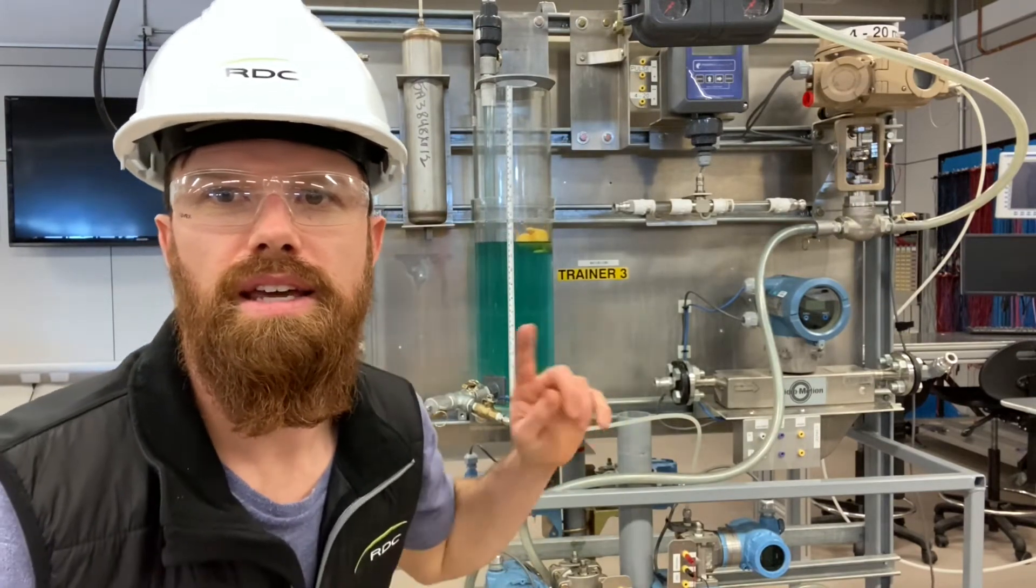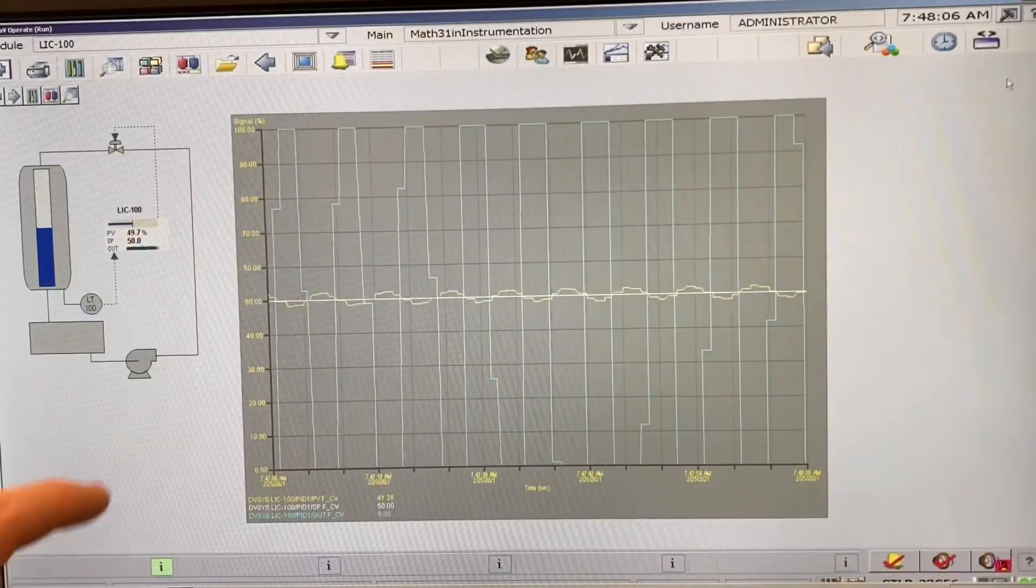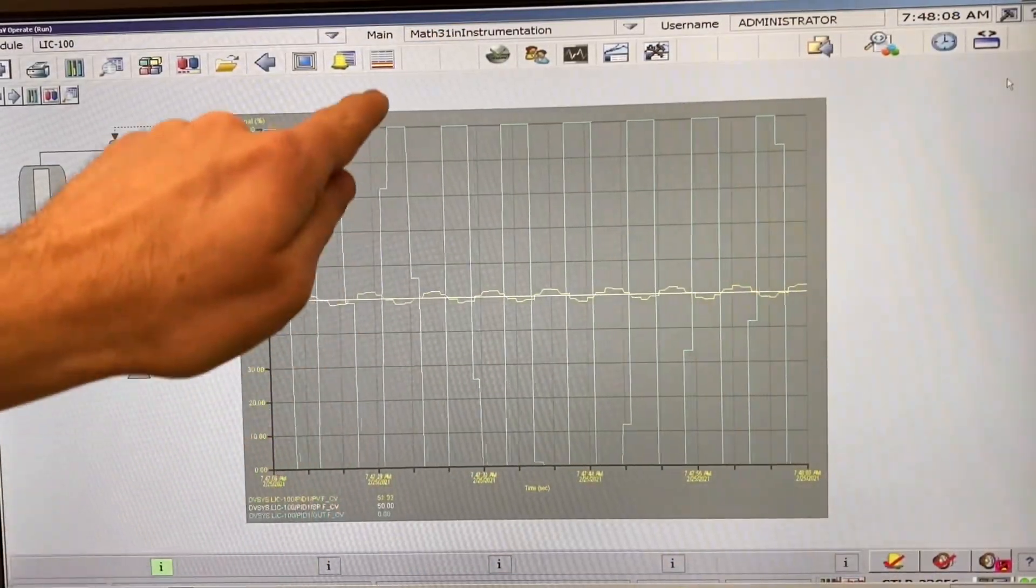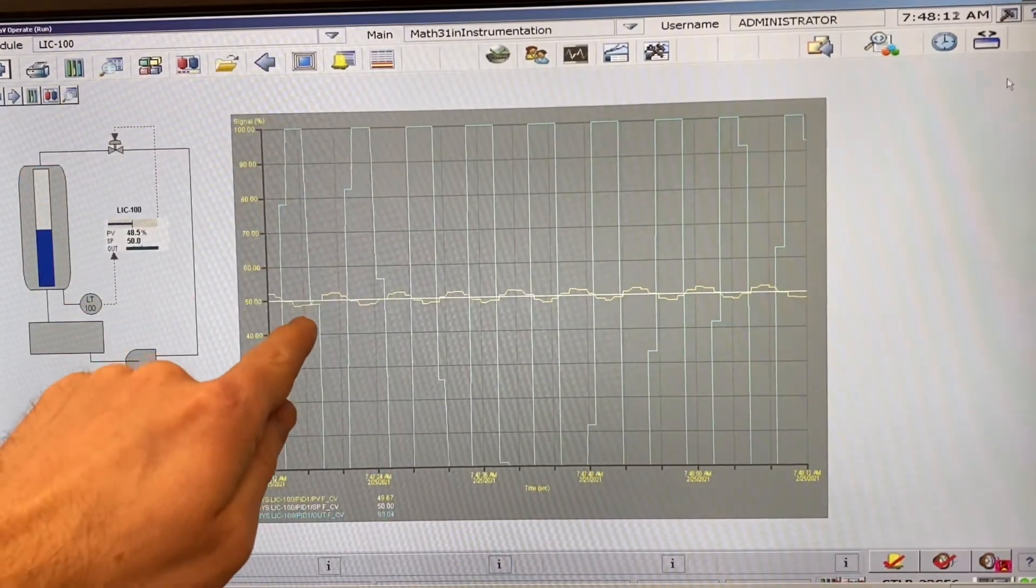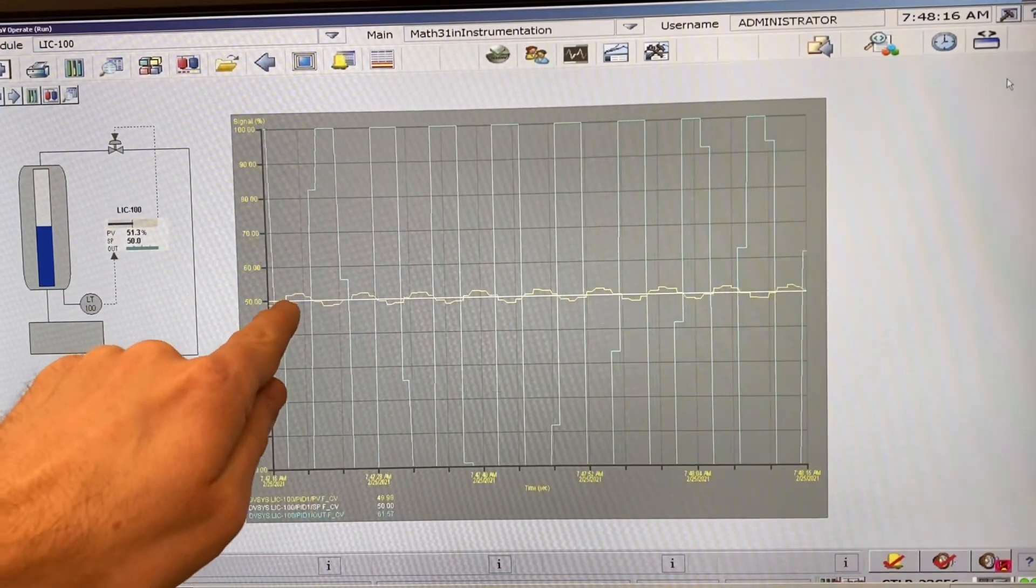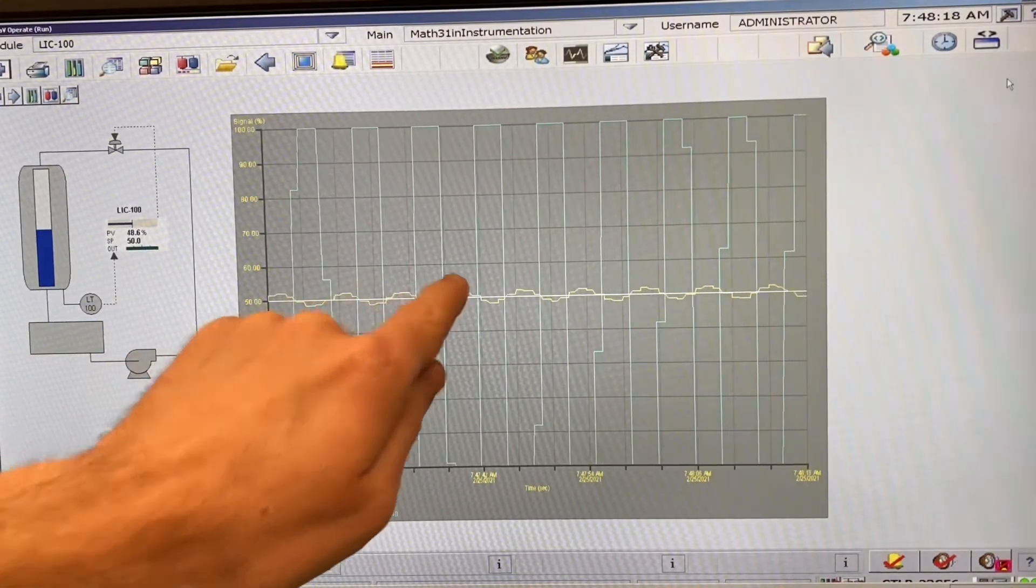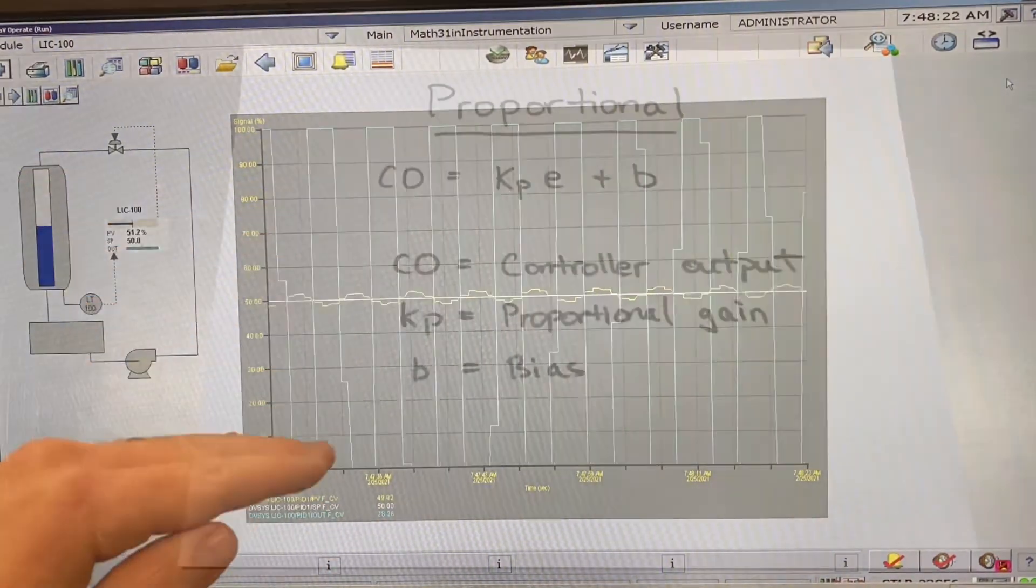So I wanted to draw your attention over here to our trend. You can see this teal line is the valve opening and closing, the signal going out to our control valve, so the controller output. The white line here is our set point. That's where we want our level to be. The yellow line here is our process variable, the level, oscillating around the set point because the control valve is opening and closing.